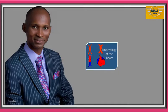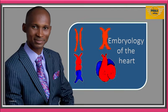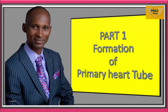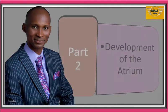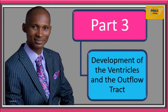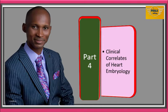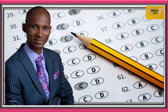This is a lecture series on the embryology of the heart. The lecture is divided into five parts. Part 1 is on the formation of the primary heart tube. Part 2, which we are watching now, is on the development of the atrium or atrial chambers. Part 3 is on the development of the ventricles and the heart flow tract. Part 4 is on the clinical correlates of heart embryology. And in Part 5, we will test our knowledge through a question and answer section, where we will answer related questions from various examination boards.